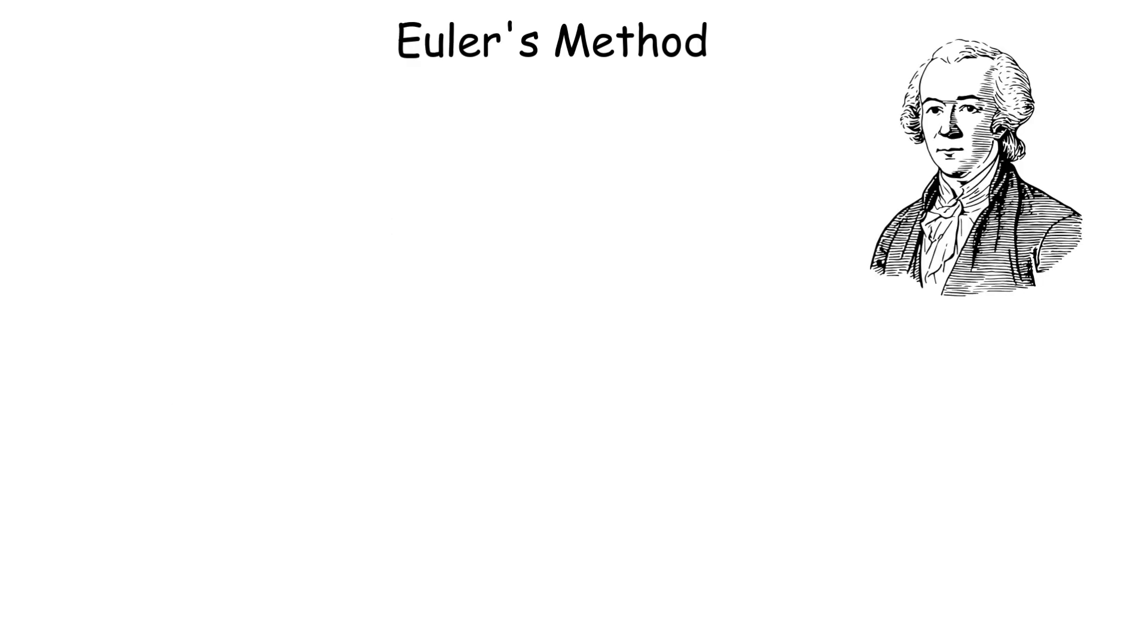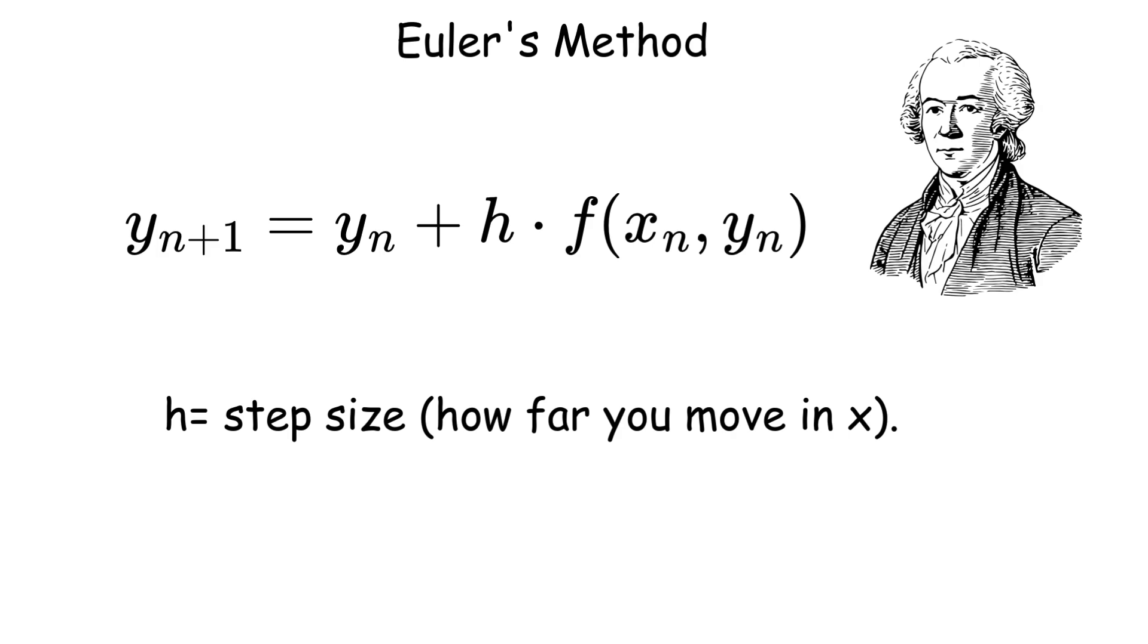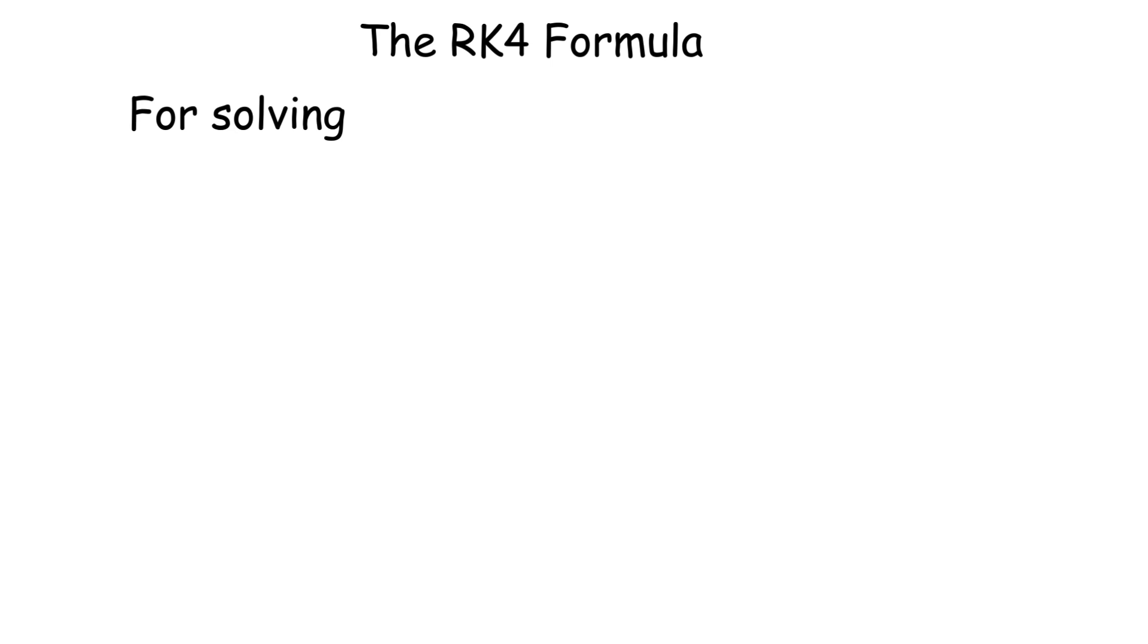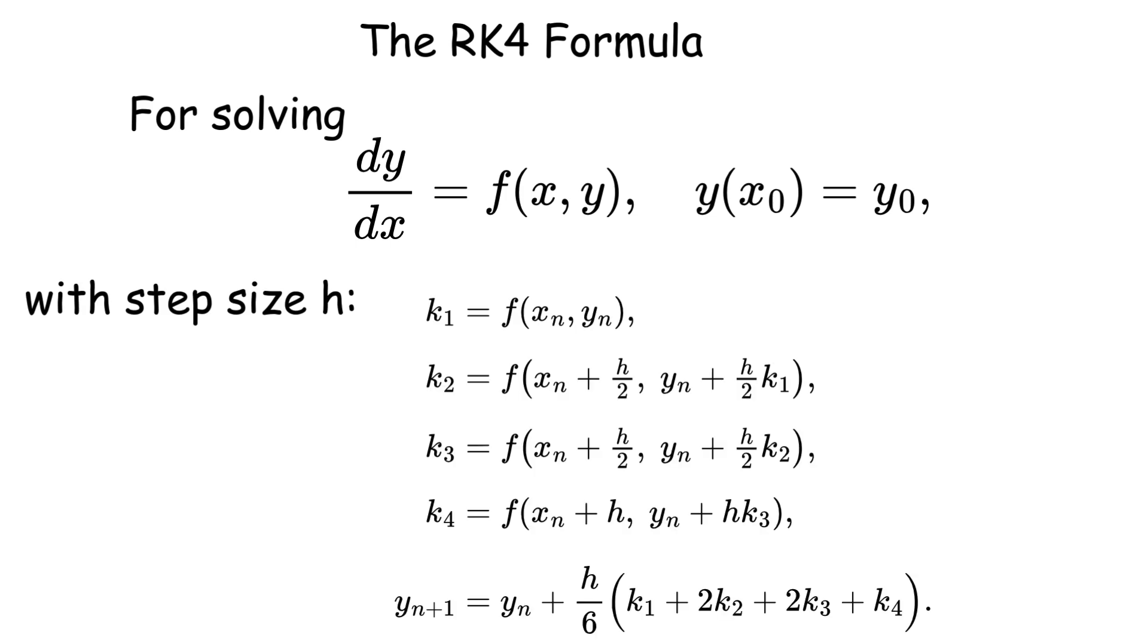For differential equations, Euler's method approximates solutions using this formula, where h is the step size. It's simple, but has only first-order accuracy. Runge-Kutta methods achieve higher accuracy by evaluating the derivative at multiple intermediate points. The fourth-order Runge-Kutta method is the gold standard, providing fourth-order accuracy while remaining computationally manageable.